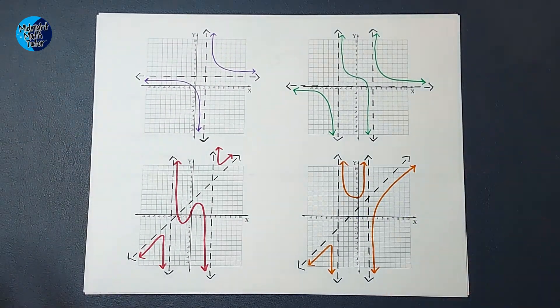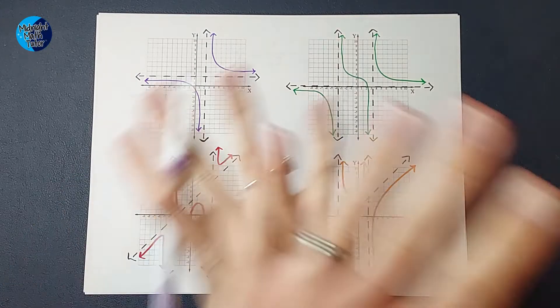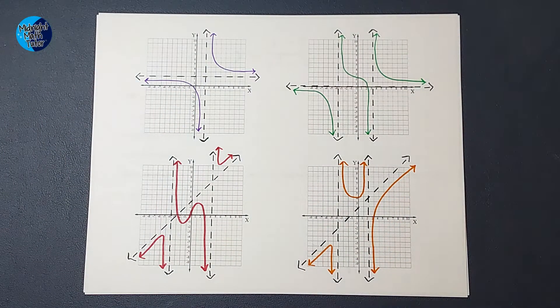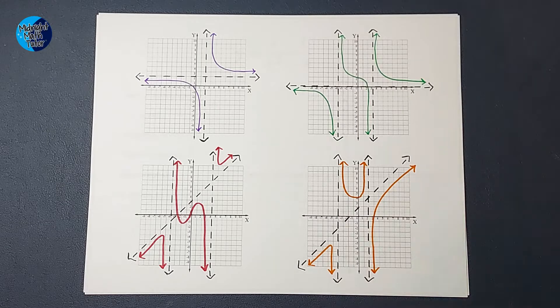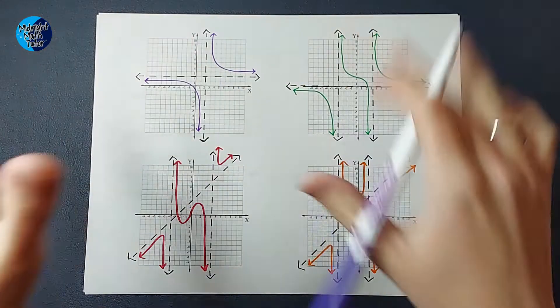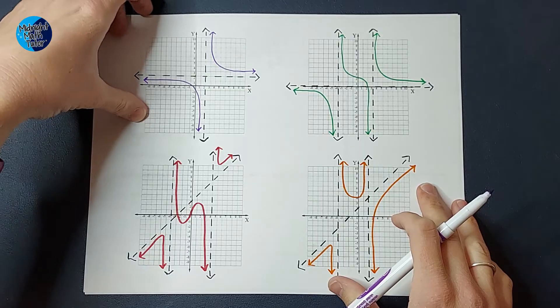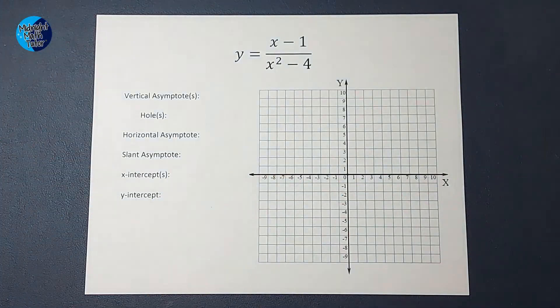Now, it probably goes without being said, but I'll say it anyway, this is not all the ways that these can look, but this gives you a good idea of what to expect when you're graphing these. This is the types of things to expect. Now, when we graph these, we follow some steps.